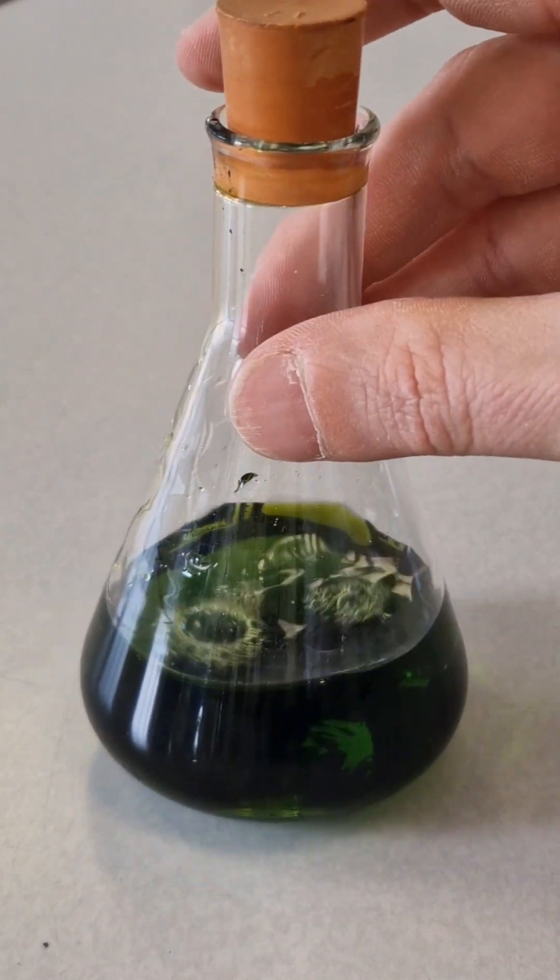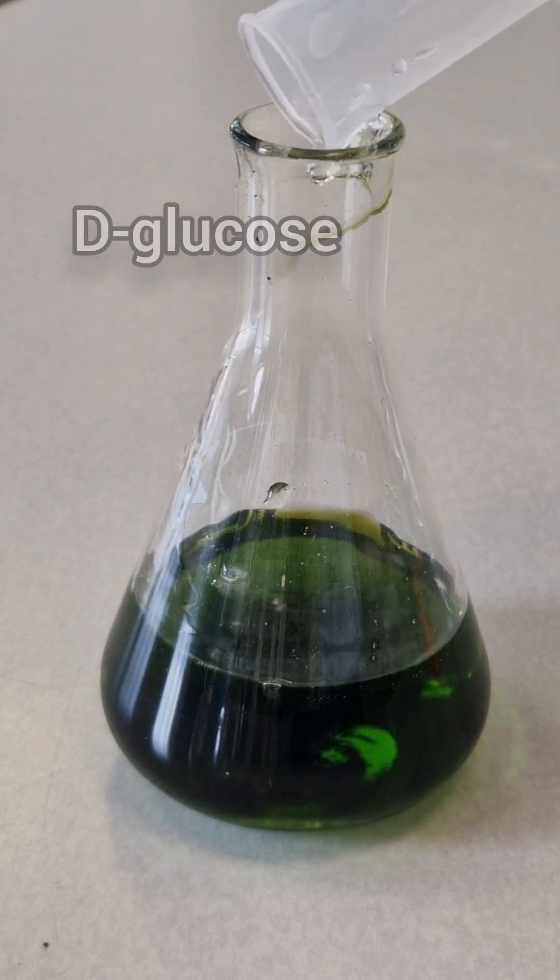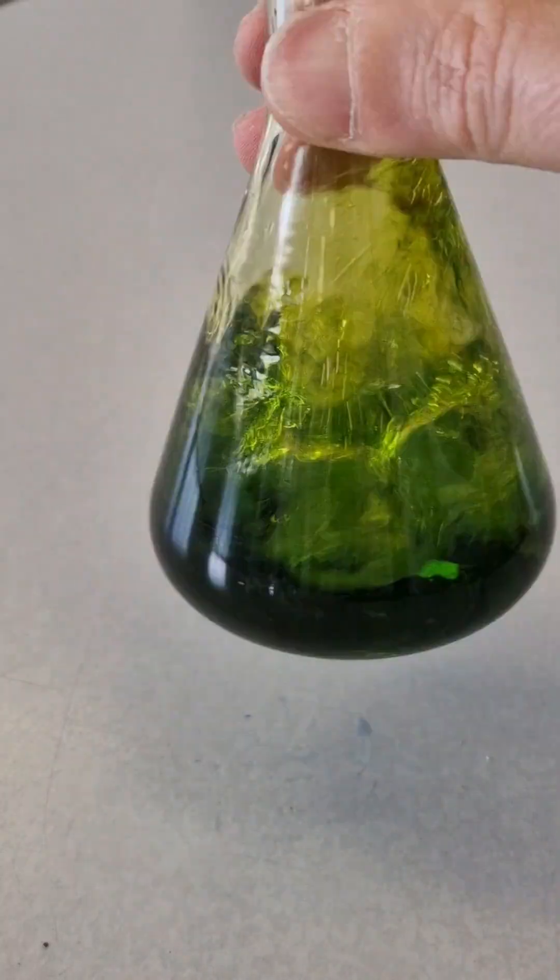Next we're going to add some D-glucose. Now glucose is a reducing sugar. Keep that in mind for what's going on later on in the experiment. Shaking again, you'll see the colour of green now lightens slightly. And now we're good to go.